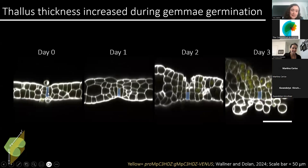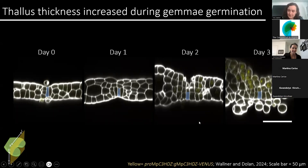In the transverse plane, we again see that the apical cell is centrally located at day zero, but by day two and day three is located on the ventral side of the meristem. We can also see an increase in the thickness of the meristem during these time points. So it's clear that the early gemma meristem is very different to the mature plant, but does the meristem continue to change or does it reach a stable anatomy?